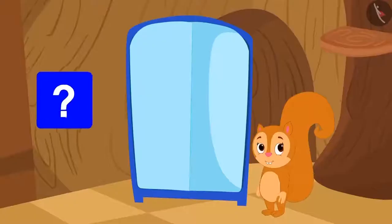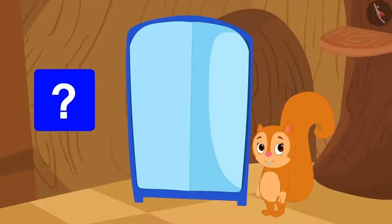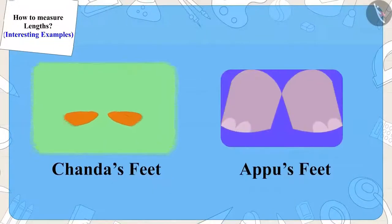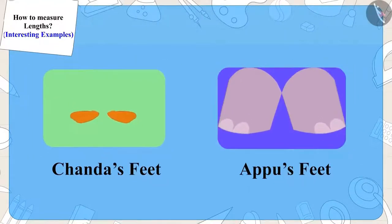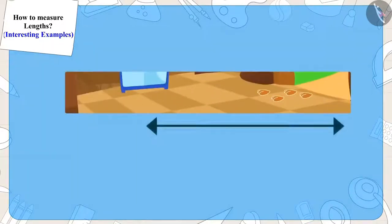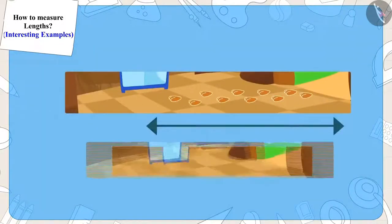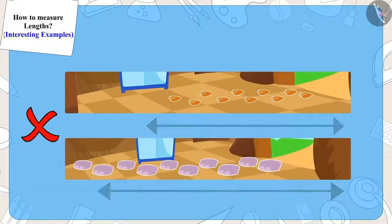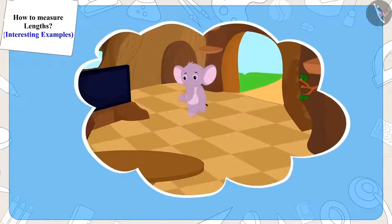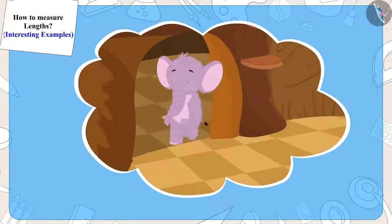Children, can you say why this happened? Actually, Chanda's feet are too small and Appu's feet are too big. This is the reason why the distance measured by Chanda's ten steps and Appu's ten steps are not the same. So when Appu walked ten steps straight from the door, he reached the other room.